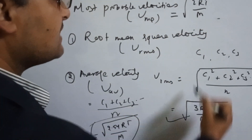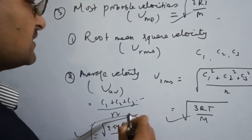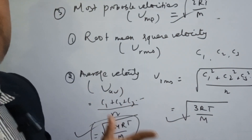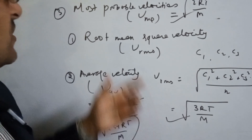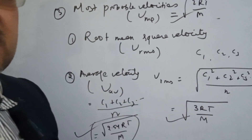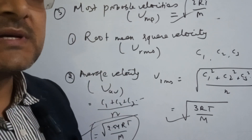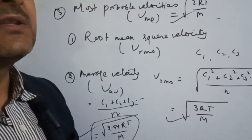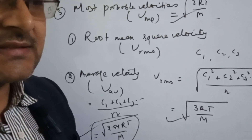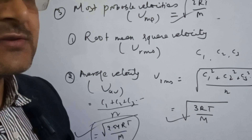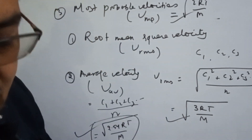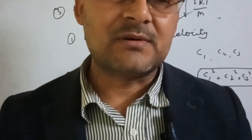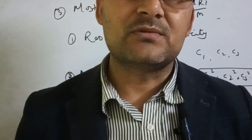We can measure three types of velocity in the gas molecule. Most probable velocity means the velocity possessed by the maximum number of gas molecules. We can solve problems using these three types of velocity.